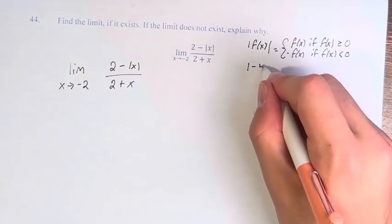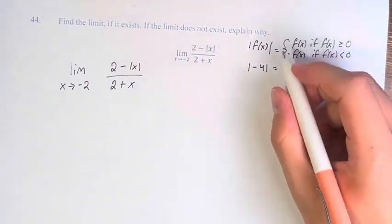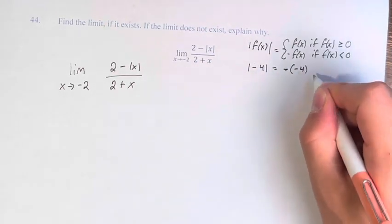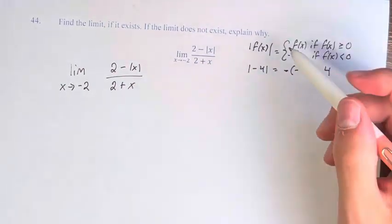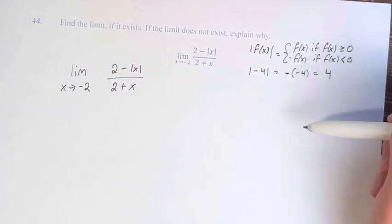It's like if we have the absolute value of negative 4, this is not equal to negative 4, it's equal to negative negative 4, which is 4. We think of that as just making it positive, but really we're multiplying it by negative 1.